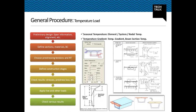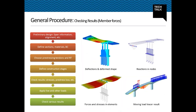Apart from vehicle load, engineers also need to consider thermal actions on the structure. Both seasonal temperature and linear or non-linear temperature gradient can be considered. If the section for which temperature difference is to be considered is not rectangular, the width of an equivalent rectangle section can be used. Once analysis is performed, various member forces need to be checked in both graphical and table format.